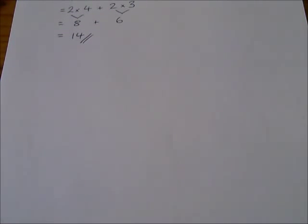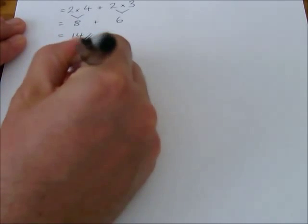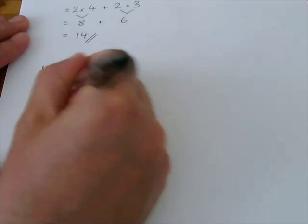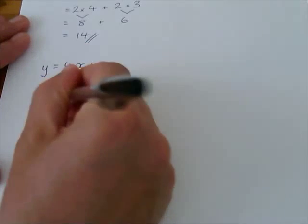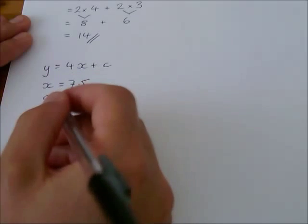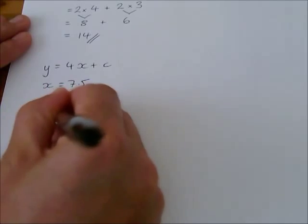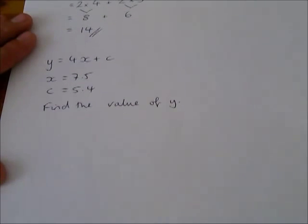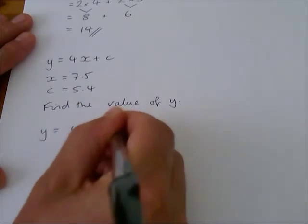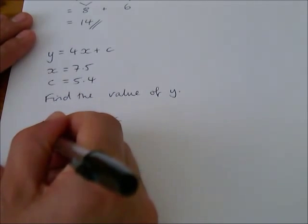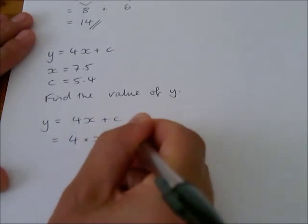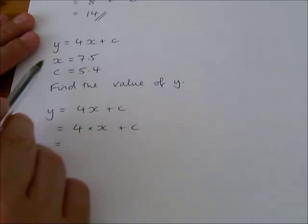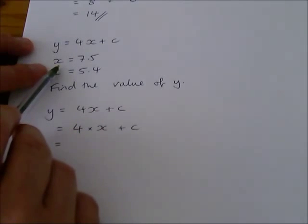Here's another typical sort of question. Let's imagine that you are given the formula y equals 4x plus c. And you are told that the value of x is 7.5, the value of c is 5.4, and you're asked to work out the value of y. So what do we do? Well, I'm going to write out the formula to show that's where I'm starting. I'm going to write it out with a times in it, just to be absolutely clear what I'm doing. And then I'm going to replace that x with the x I was given. So I have to look right back up to the question and say, what is my value of x? x is equal to 7.5.